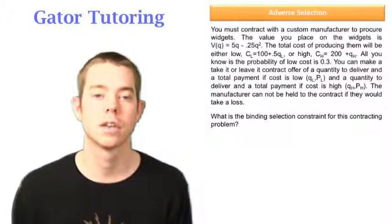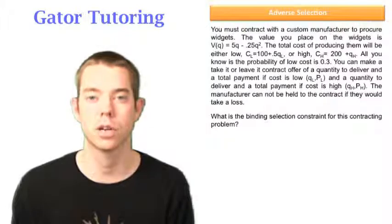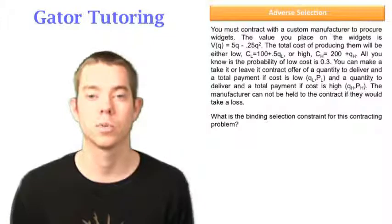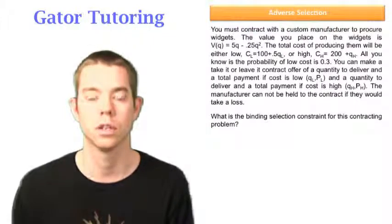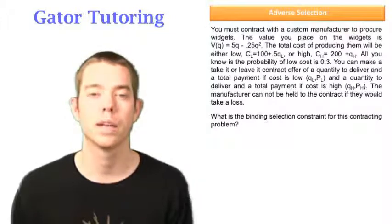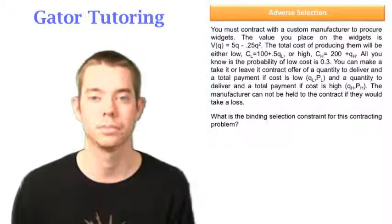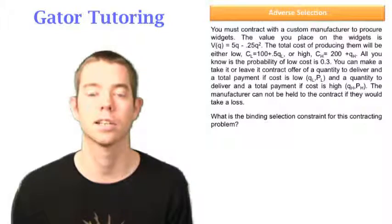The first question says, what is the binding selection constraint for this contracting problem? Well, remember the participation constraint was aimed at the high-cost job, and the selection constraint was aimed at the low-cost job. We only had to worry about him lying and saying that it was a high-cost job when in fact it was a low-cost job. So this was the truth-telling constraint that they're asking for, and let's take a look at what that looks like.